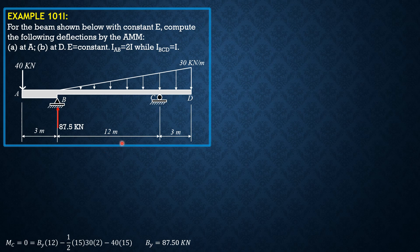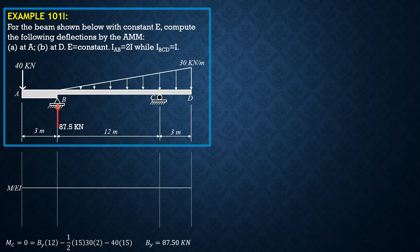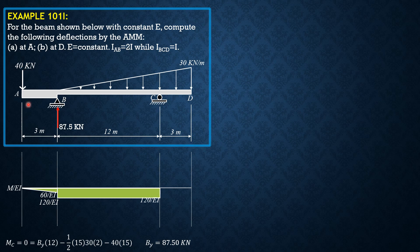For the moment diagram by parts, we select C as the moment center. We begin with 40: 40 times 3 is 120, divided by 2, so it is only 60 over EI. Then just to the right it becomes 120. Then 40 times 15 is 600, so from here to here the overall height is 600. But the height of that triangle is only 600 minus 120, so this is 480.